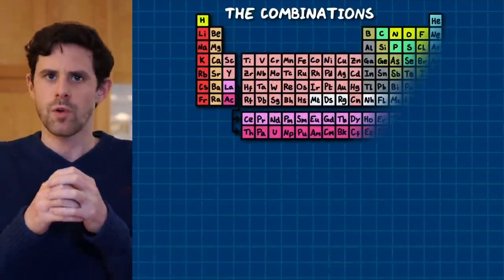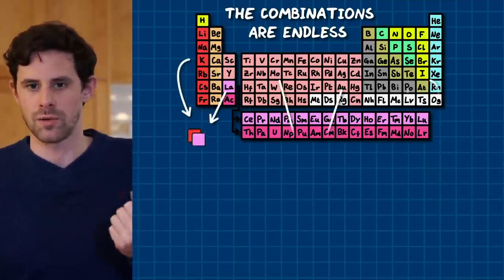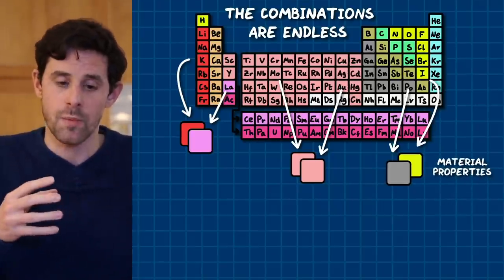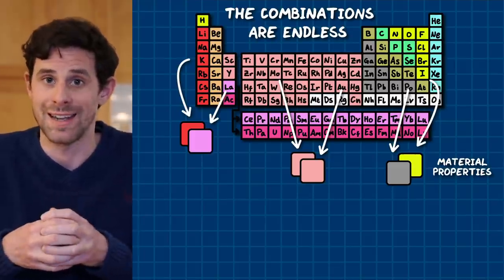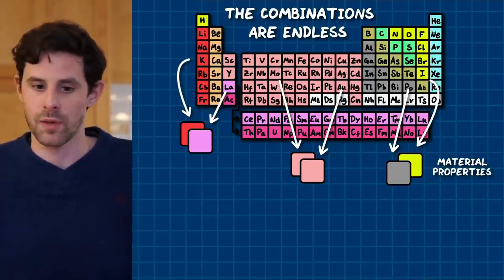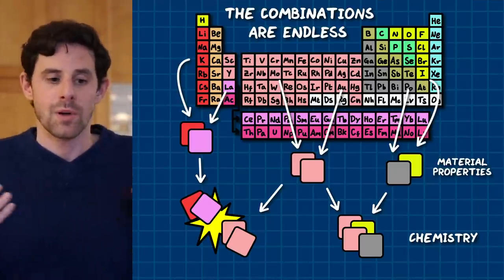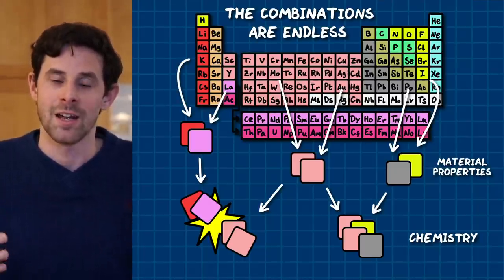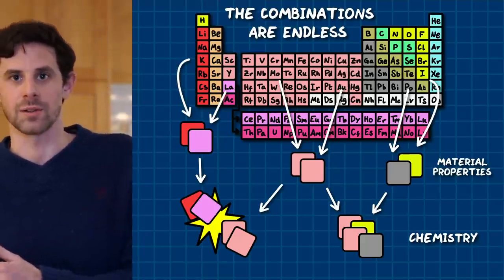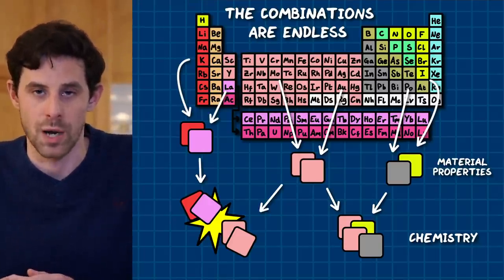The big picture is we've got the entire periodic table at our disposal, and different combinations of the elements will produce materials with different physical properties. The number of combinations is huge — essentially infinite. Another aspect is what happens when we bring those materials together, and that's essentially chemistry. We're faced with another infinite set of combinations, not just the materials but also combinations of different materials interacting with each other. But we can use quantum simulation to simulate those interactions as well.